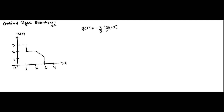In the first few questions we picked up simple expressions consisting of 2 or 3 individual signal operations, and then as we move forward we slowly increase the number of operations — 4, 5, like that. We are mixing different operations: in some cases time shifting, time scaling, amplitude scaling; in some cases time scaling, amplitude scaling, amplitude inversion; in some cases something different. We do different combinations so that you get used to all the different ways in which a combined signal operation expression can be formed.